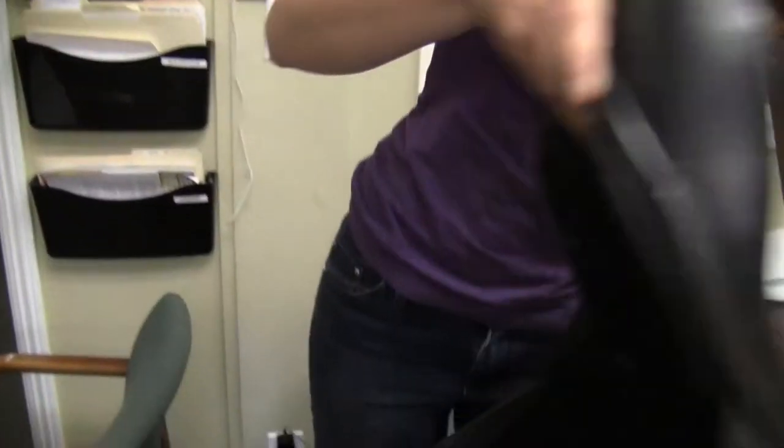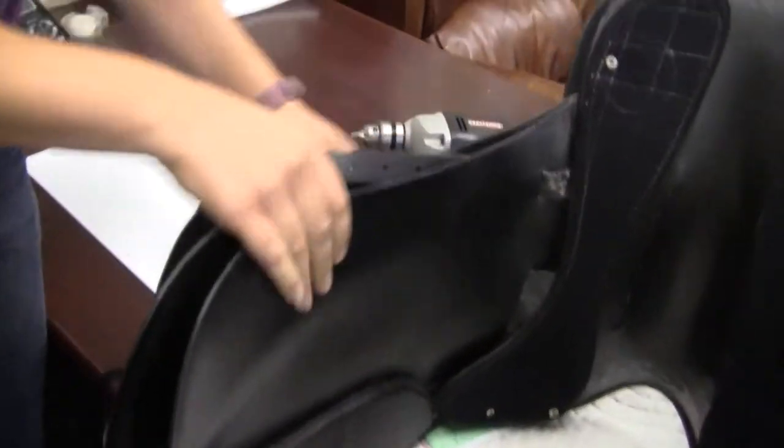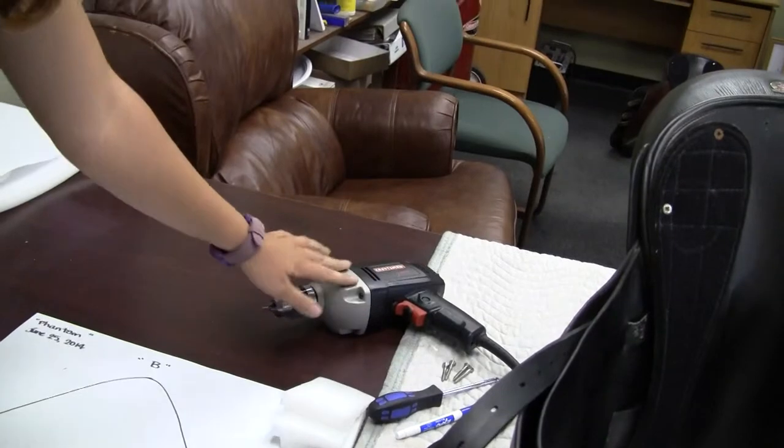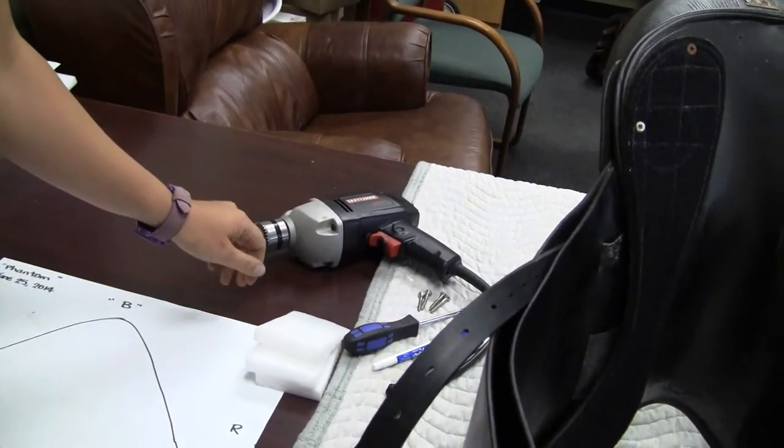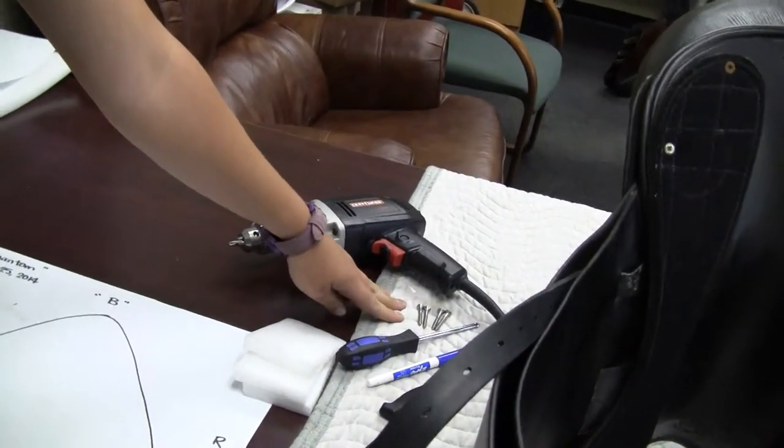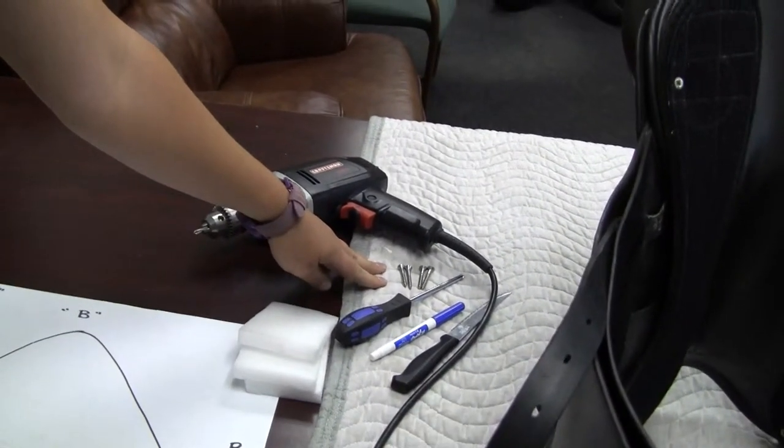A Phillips screwdriver or a screw gun, some number 10 wood screws that are an inch and a half long. Hopefully we sent these to you along with your shimming material.